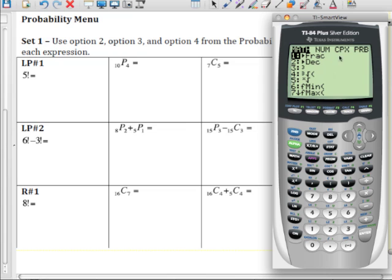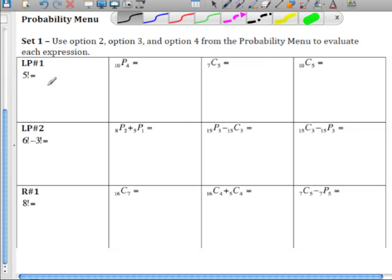Hit the math button, go to my probability menu. You'll see that choice four, or option four, is the factorial symbol. So I'm going to use four. I have the five factorial there. Hit enter. And that's 120. So let's write that down. Five factorial is 120.